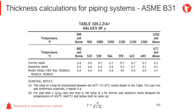Coefficient Y, dimensionless and temperature dependent, is obtained from the table shown on the screen. As observed, it depends on the operating temperature and the type of material used. It should be remembered that carbon steels and alloy steels are generally of ferritic structure, while most stainless steels used in industrial plants are of austenitic structure.